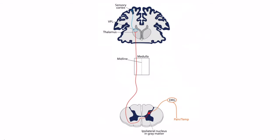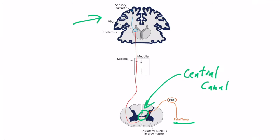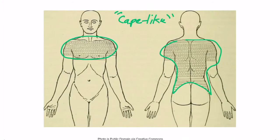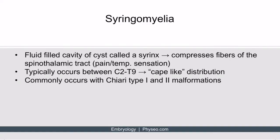The spinothalamic tract carries sensory information from the extremities to the brain. The syrinx is a large collection of CSF that causes the central canal to expand, and as it enlarges it compresses anteriorly, so pain and temperature sensation will not reach the brain as it should. Since the spinothalamic tract is bilateral, pain and temperature sensation from both sides is impacted, resulting in a cape-like distribution. Syringomyelia commonly occurs with both Chiari type one and type two malformations.